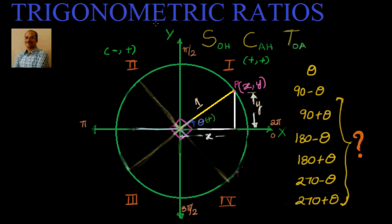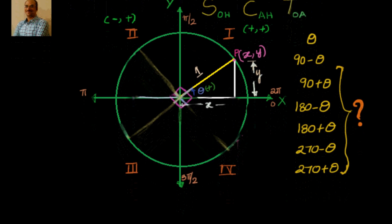We know that quadrant angles are 90, 180, 270, and 360 degrees. So if we are adding or subtracting the quadrant angles from theta, how the values will change — based on that, let's also generalize and get a formula which we can apply easily.